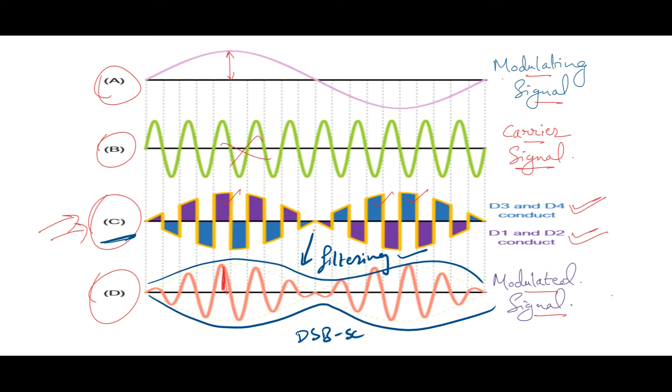But in practice, full elimination is not possible, so it is suppressed to maximum extent. That is how ring modulators are used to generate DSB-SC waveform. That's all for now. Thank you and have a nice day.